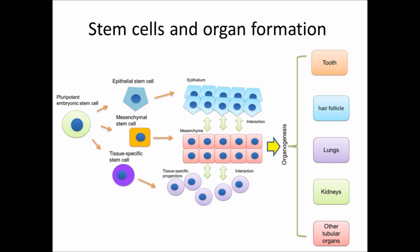These interactions result in the formation of highly specialized functional tissues and organs, such as tooth, hair follicle, lungs, kidneys, and other tubular organs. Once the organism matures, the pluripotent embryonic stem cells vanish, and some multipotent adult stem cells remain in the developed tissue to sustain homeostasis and repair injuries.